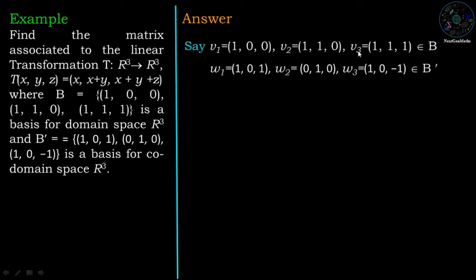In our example, V1, V2, V3 are the basis vectors for the domain space: V1 = (1,0,0), V2 = (1,1,0), and V3 = (1,1,1). W1, W2, W3 are the basis vectors for the co-domain space: W1 = (1,0,1), W2 = (0,1,0), and W3 = (1,0,-1).